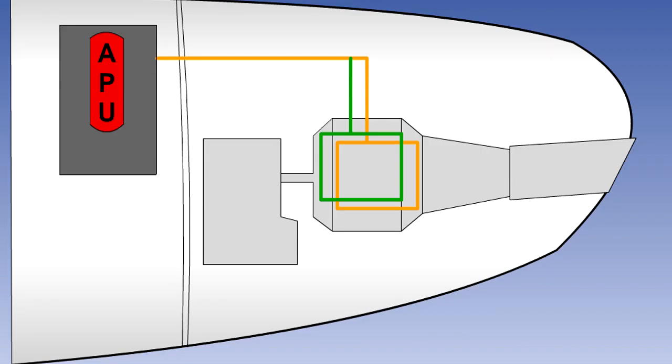The APU fire detection system uses the same type of dual-loop detectors as the main engines.